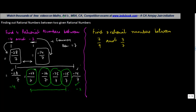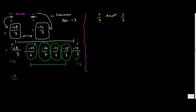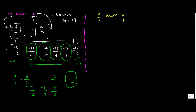You simply convert them into equivalent fractions — the denominator can be anything. For example, I took seven, but you can even take two. If you write minus four upon one as minus eight upon two and minus two upon one as minus four upon two, the numbers lying between them with denominator two would be minus seven upon two, minus six upon two, minus five upon two. However, with denominator two there are only three numbers between them, so ideally you should take a larger denominator like three or four or more.